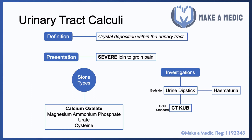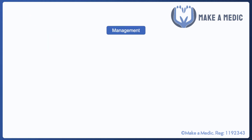The gold standard investigation is a non-contrast CT KUB, which allows visualization of the stone within the urinary tract. There are other investigations as well, such as U&Es, which allow you to assess whether there's been any compromise in renal function.